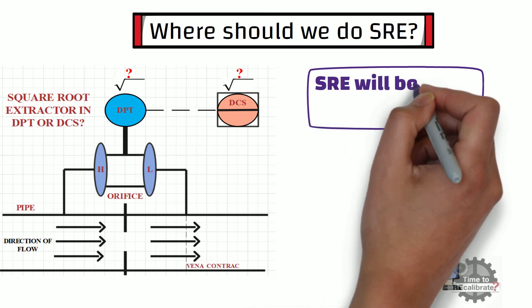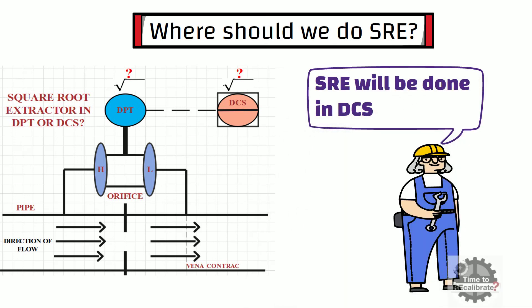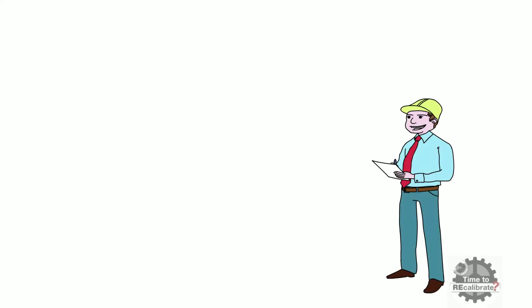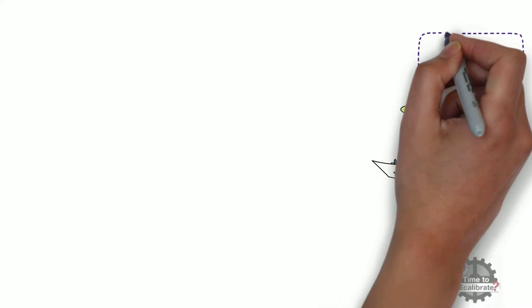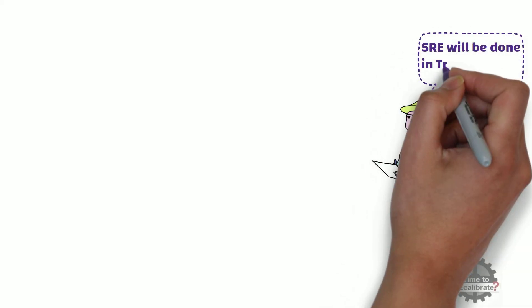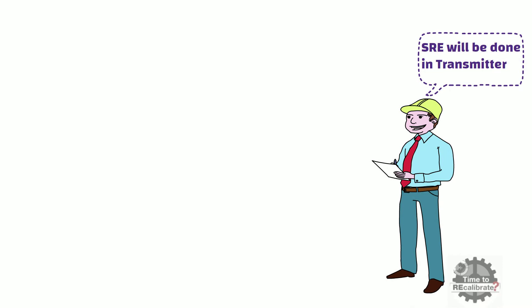Sometimes the field engineer assumes that it will be done in DCS, and he purchases transmitter without square root extractor function. On the other side, the system engineer assumes it will be done in transmitter. And nobody does it, which is not correct.